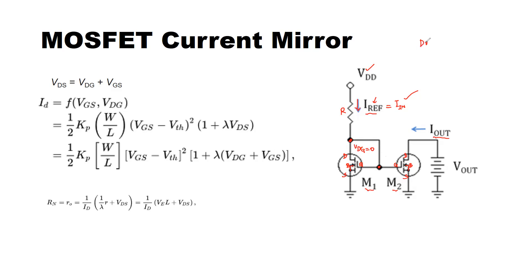Because the drain and gate are shorted, VDG of M1 is equal to zero. Such an arrangement is called a diode-connected transistor. In the case of a BJT, there is an exponential relationship between input current IB and input voltage VBE. For a MOSFET, there is no such exponential behavior; rather, you have a quadratic relationship between drain current and voltage, so we may still call it a diode-connected transistor for simplicity.